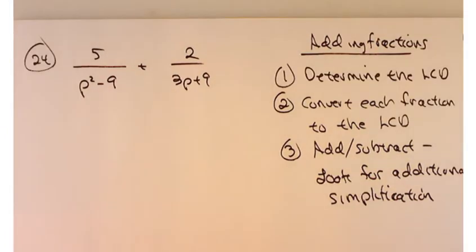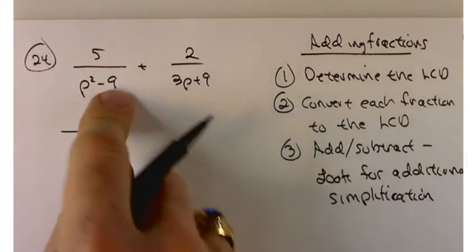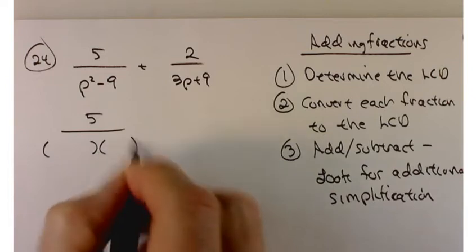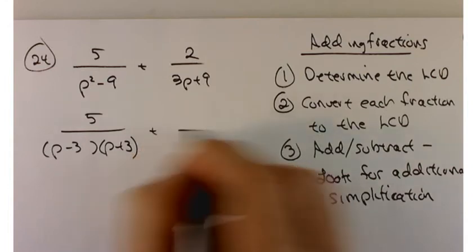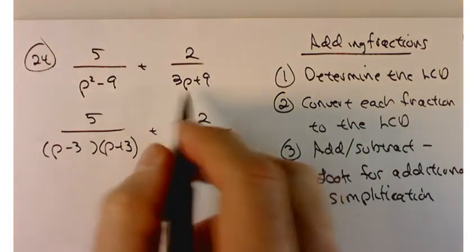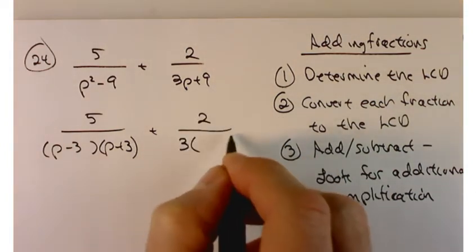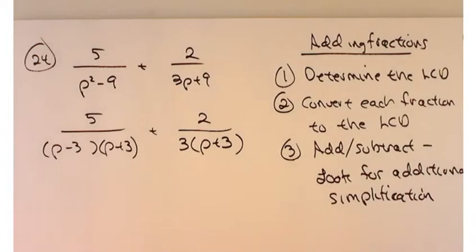Problem 24 is 5 over p squared minus 9 plus 2 over 3p plus 9. To determine the LCD, first factor the denominators. The first one is a difference of squares: p minus 3 times p plus 3. For the second, first try factoring out the GCF, which is 3, giving 3 times p plus 3. If you need more practice, look at the section 7.3 video.